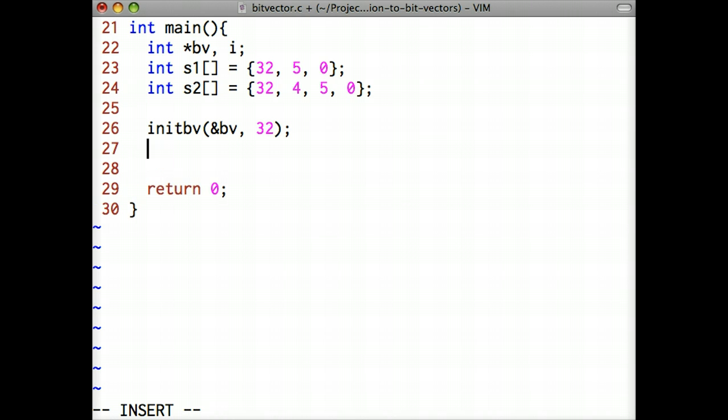With the bit vector initialized, we now insert every integer in S1 into the bit vector. Notice that when S1 at i encounters 0, the loop exits.